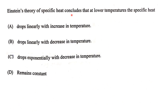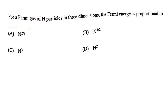Einstein's theory of specific heat concludes that at lower temperatures the specific heat drops exponentially with decrease in temperature, while at higher temperatures the specific heat is equal to 3R. Next, for a Fermi gas of N particles in three dimensions, the Fermi energy is proportional to: